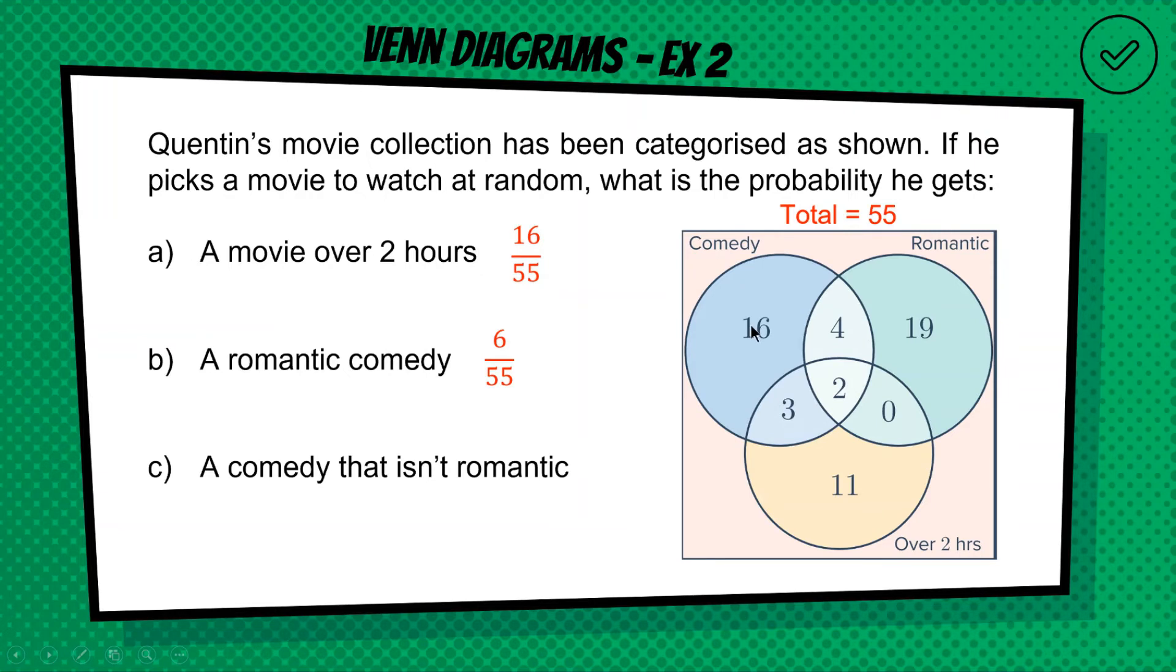And for the last one, a comedy movie, so something that's in the blue circle that isn't romantic. So we want to be in the blue circle but not in the green circle. Okay, so we can have this 16 here and we can have this 3 here. Okay, but we can't have this 4 and this 2, because these guys are in the romantic circle. So we've got 16, we got 3, so we've got 19. So our correct answer is 19 out of 55.